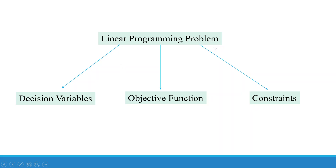Any linear programming problem will have three parts: one, decision variables; two, objective function — that is, to maximize the profit or minimize the cost; and three, constraints. Let's take one case study.